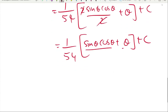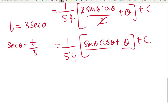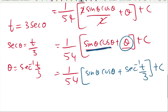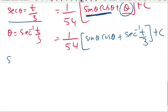Now we convert back to t. Our substitution was t = 3·sec(θ), so sec(θ) = t/3, meaning θ = sec⁻¹(t/3). We can use that for the θ term: write it as sec⁻¹(t/3) + C. For sin(θ) and cos(θ), we use the triangle trick.